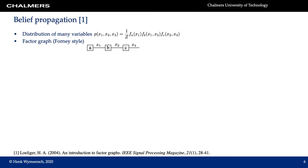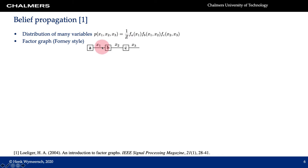We now move on to belief propagation. In belief propagation we consider distributions over multiple variables, such as p(x1, x2, x3). We assume this distribution can be factorized as a normalization constant 1/Z times factors fa, fb, and fc, where each factor contains a subset of the arguments. From this factorization we can draw a factor graph, where each node corresponds to a factor and each edge corresponds to a variable. For instance, node a corresponds to fa and edge x1 corresponds to variable x1. Node a only connects to x1, meaning fa has only one variable, whereas x1 connects to both a and b because x1 appears in both fa and fb.